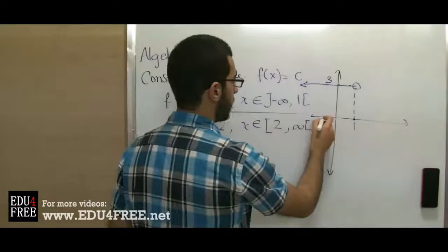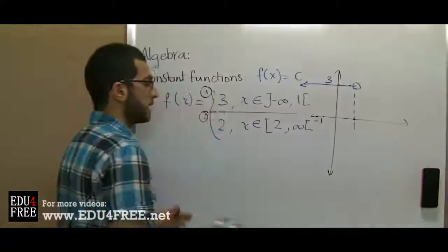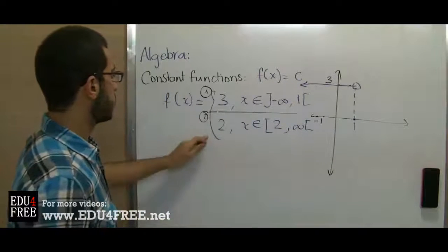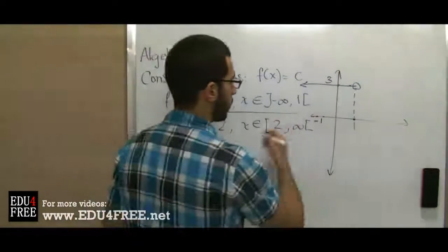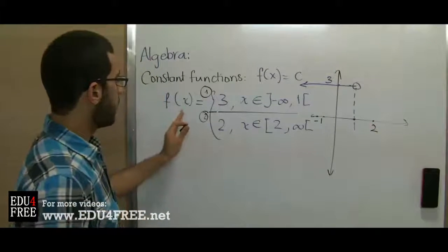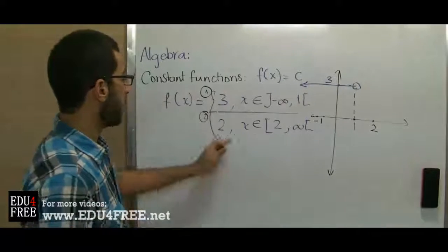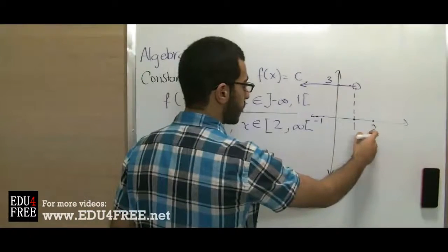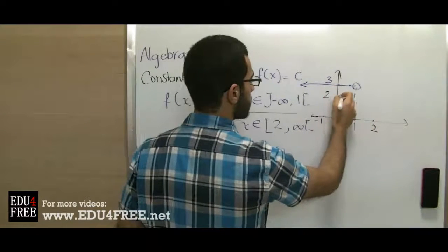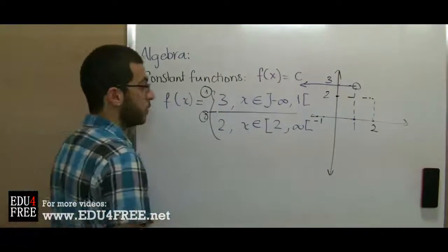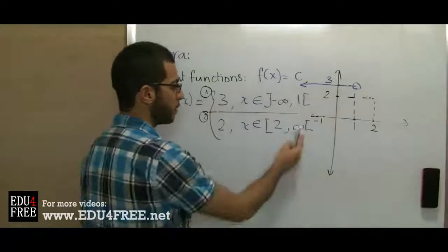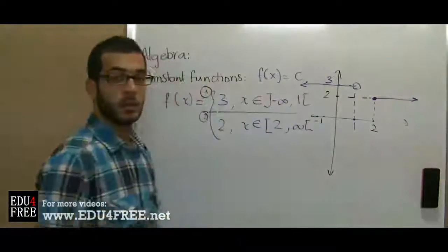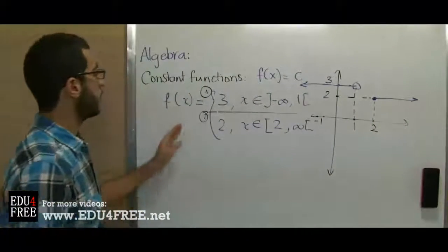For example, at x = -1, which belongs to this interval, y also corresponds to 3. For the second part, we do the same: we locate where 2 is on the x-axis. Since this is the beginning of the interval and it is closed, the endpoint is included. f(x) = 2 starting at x = 2, and the ray goes to the right toward positive infinity. The 2 is included because the interval is closed. So this is how to graph a constant function.